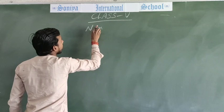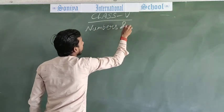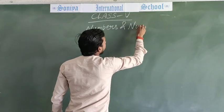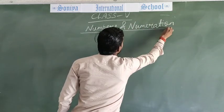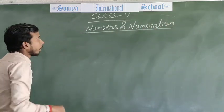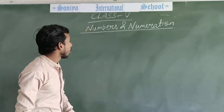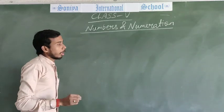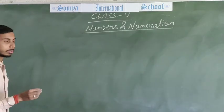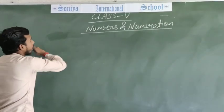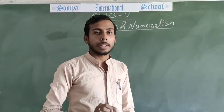Numbers. In the previous class, class 4, we have already studied about numbers. Today I will tell you about the place value chart. Numbers can be written in two forms: in the Indian system and in the International system.